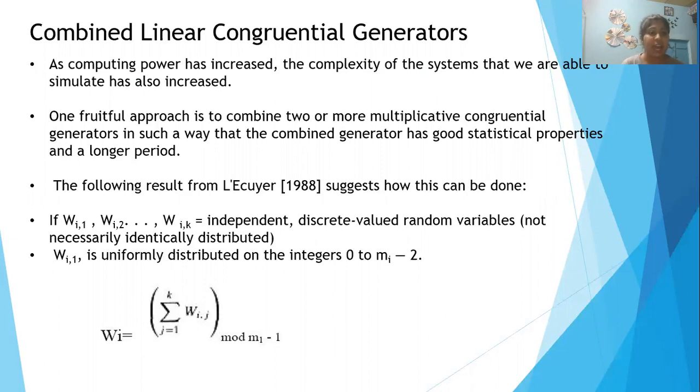If W_i,1, W_i,2 to W_i,k are considered to be independent, discrete-valued random variables, k is the number of generators.